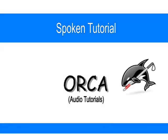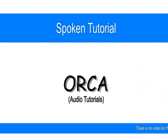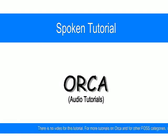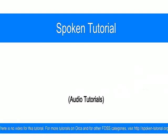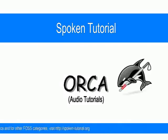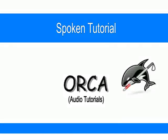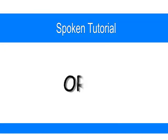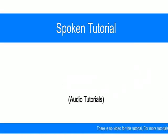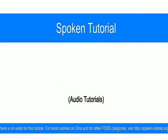Orca is a powerful, state-of-the-art, speech-based screen reader for the GNU/Linux operating system. With the help of this assistive software, a totally blind person can do all the activities on the desktop without sighted assistance. Before we go ahead, let me introduce you to the reader of this tutorial. With me is Ankita Shanbhag, who would be reading the script while I will be performing the activities on the desktop.